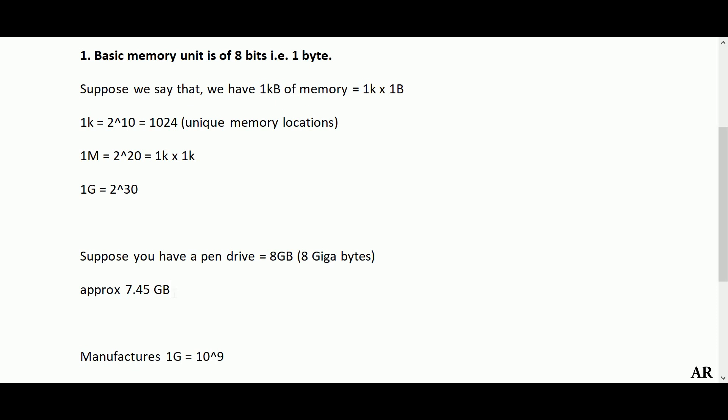This is the terminology difference between what manufacturers use and what the computer makes use of. Whenever you come across any memory element purchased from the market, on the specification side with an asterisk it will be written that 1 KB equals 1000 bytes and not 1024 bytes. I hope up to this point you are clear with the terminology of 1K, 1 Mega, and 1 Giga.